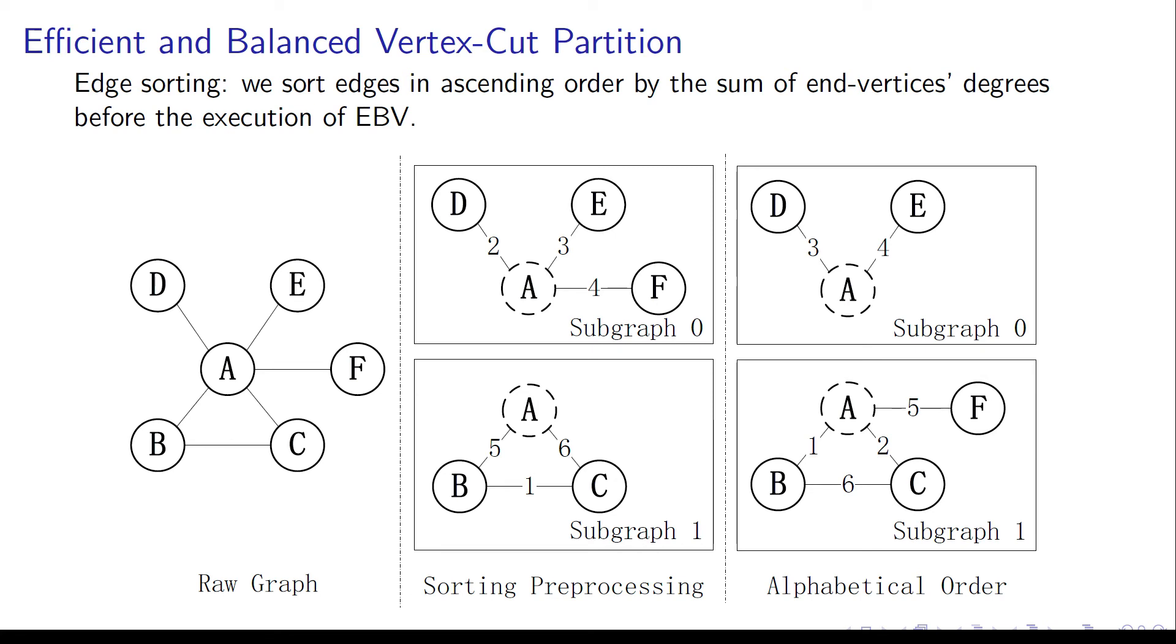We demonstrate it with this figure. The one in the middle is the partition result with degree sorting, and the right is the alphabetical order. It's obvious that subgraph 1 on the right is much larger than subgraph 0, in both edges and vertices.